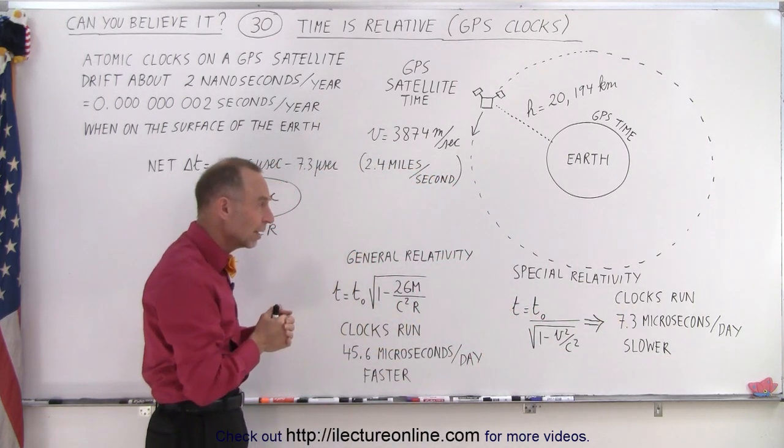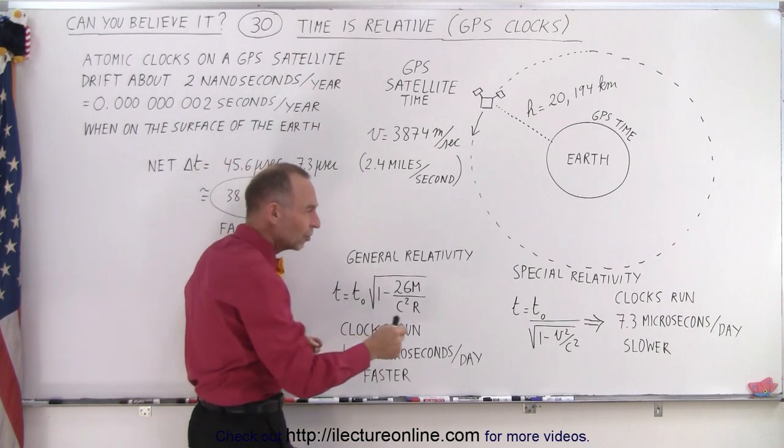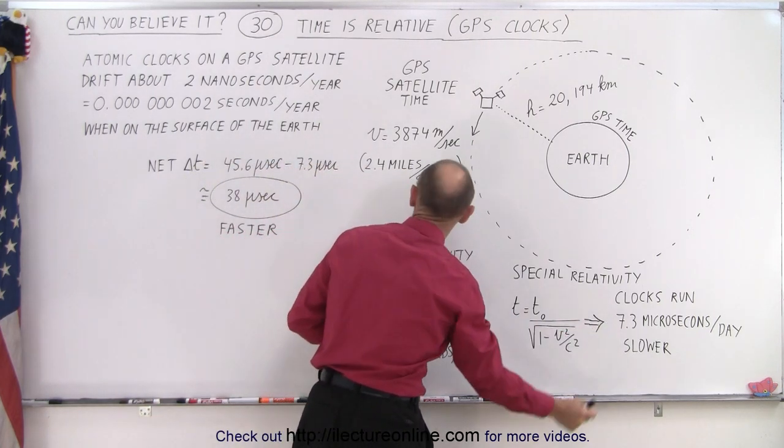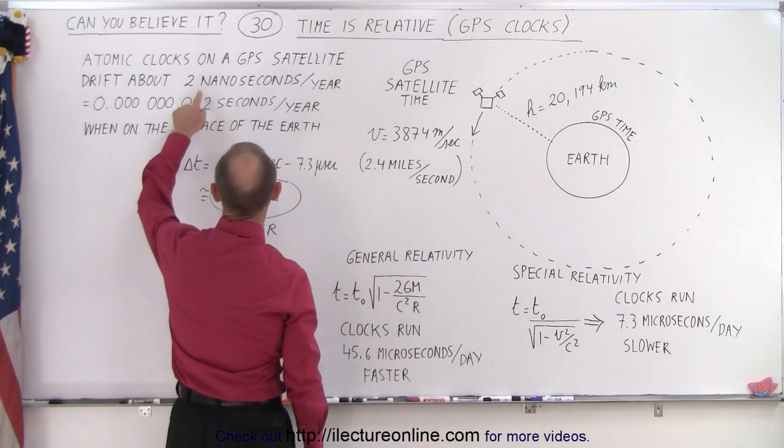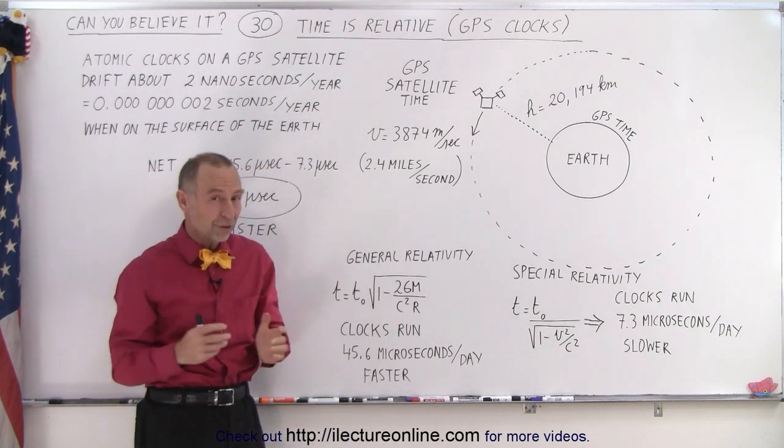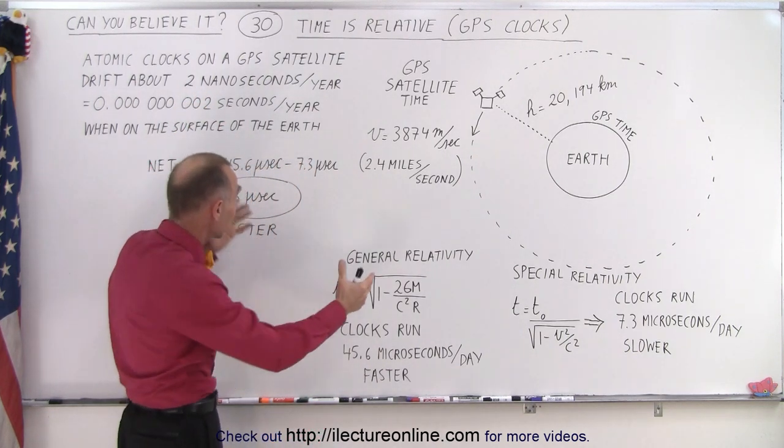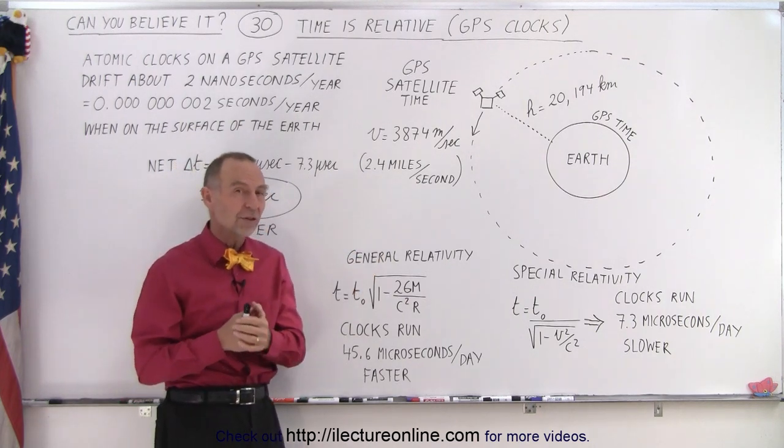So clocks actually run slower on the satellites due to this speed, to their speed, and the relativity related to that. So notice that 7.3 microseconds per day is a whole lot more than 2 nanoseconds per year. It's an enormous difference. So definitely, that would play a big role in the accuracy of those atomic clocks.